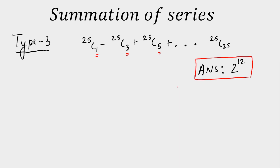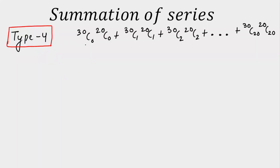Now moving on to Type 4. How do we identify it? The combination of binomial coefficients will be given — products of two binomial coefficients. Draw a smiley and check the sum of the lower indexes: in the first term it's 0, the second is 2, the third is 4, and the last term's sum is 40. They are not constant.